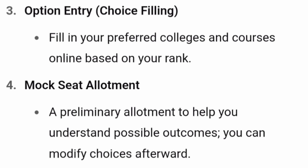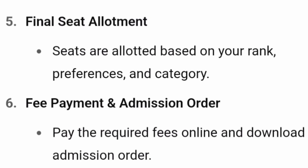Once you have completed option entry, there will be a mock seat allotment round — a practice round showing what seat you could get based on your rank. This is not the actual allotment. After the mock allotment, there will be a first round allotment, second round, and third round. The first round is the actual allotment where you get a seat and are given choices to act upon. If you are happy, you can pay the fees and download the admission order, which is required for reporting to college.